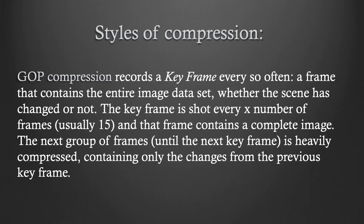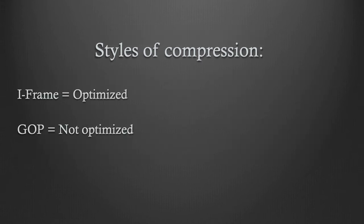GOP compression records a keyframe every so often — a frame that contains the entire image data set, whether the scene has changed or not. The keyframe is shot every X number of frames, usually about 15, and that frame contains a complete image. For the next group of frames until the next keyframe, it's heavily compressed, containing only the changes from the previous keyframe. Really good for getting high quality looking footage on cameras, but not a great type of footage to edit from. I call iFrame optimized footage, and long GOP is not optimized footage.